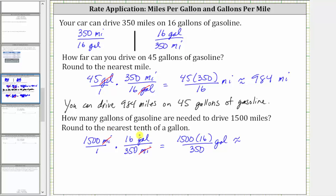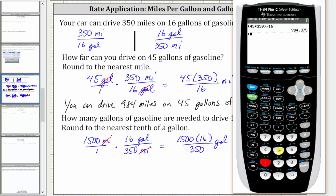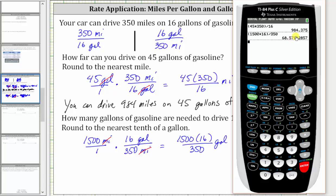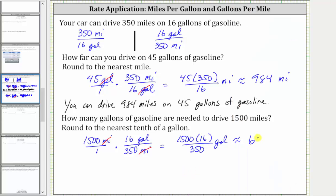Here we're told to round to the nearest tenth. So we have open parentheses 1,500 times 16, closed parentheses, divided by 350, enter. Because we have a seven in the hundredths place value, we round up. The number of gallons is approximately 68.6 gallons. So 68.6 gallons of gasoline are needed to drive 1,500 miles.